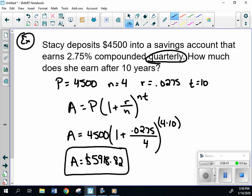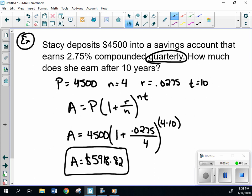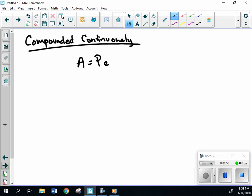There is another formula. If it is compounded continuously, we have a different formula. A equals P times E to the power of RT.